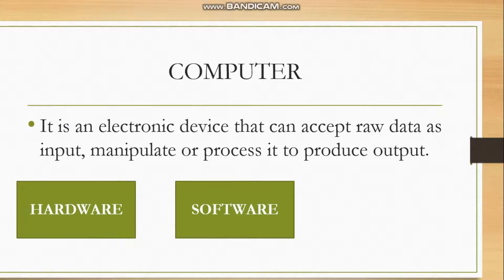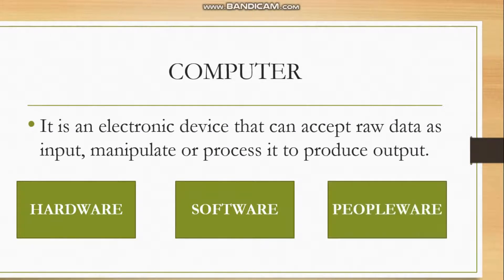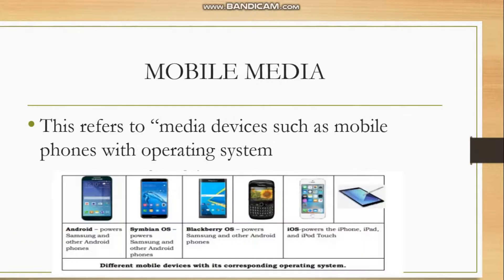Software refers to the intangible part of the computer system — for example, Microsoft Office applications like MS Word, MS PowerPoint, or MS Excel, or other applications used to produce output. Peopleware refers to the user. If either one of the three components is missing, the entire computer system will not function. Mobile media refers to media devices such as mobile phones with an operating system; each mobile device will not function without one.